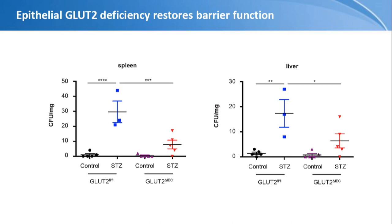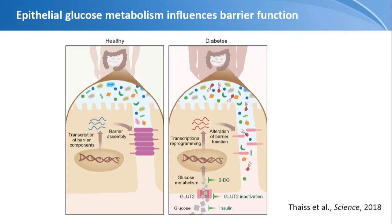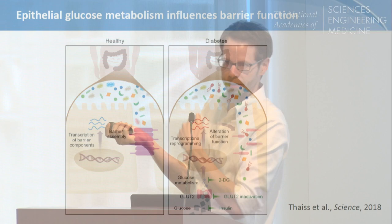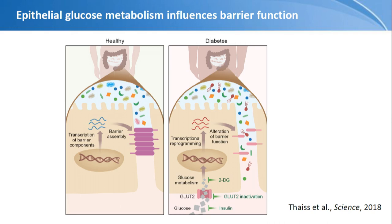These GLUT2-knockout mice are also protected from systemic spread of bacteria after enteric infection. The control case shows massive systemic colonization, but eliminating GLUT2 from intestinal epithelial cells reduces bacterial counts in the spleen and liver. In summary, in a diabetic individual, glucose enters intestinal epithelial cells via retrograde flow, causing glucose metabolism and transcriptional and epigenetic reprogramming that leads to alteration of barrier function — normally preventing microbial molecules from entering systemic circulation — resulting in bacterial and microbial molecule translocation.